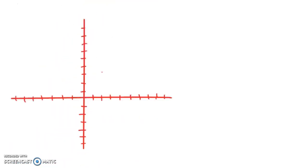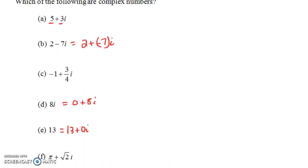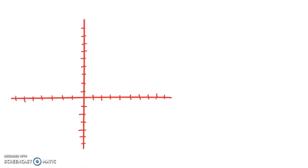One interesting thing about complex numbers is that you can think of a complex number as an ordered pair. For example, the complex number 5 plus 3i can be associated with the ordered pair (5, 3), and we can actually plot this ordered pair on the plane — going over 5 and up 3, that's this point. So each point in the plane is an ordered pair, and that ordered pair can be thought of as a complex number.